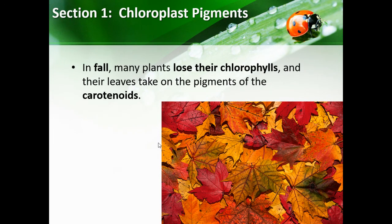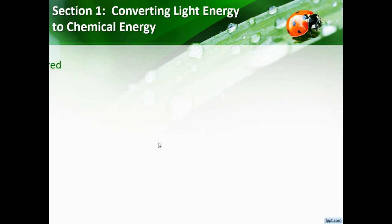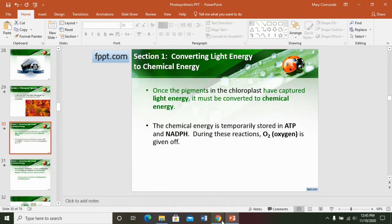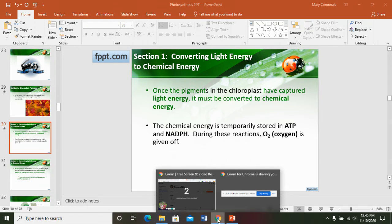In the fall, many plants lose their chlorophyll and go into a dormant stage, so the carotenoid pigments become visible — that's why leaves turn those pretty oranges, reds, and yellows. That's where we stop for today. Next time we pick up with part two of our notes, so make sure you have everything written down that's in green.